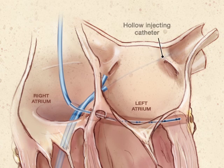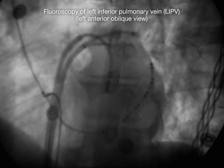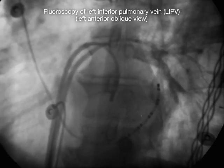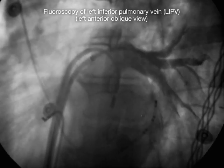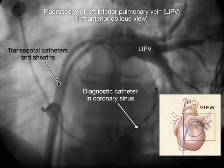A hollow injecting catheter is placed into each of the pulmonary veins and contrast is injected to outline the size and shapes of the veins. Fluoroscopy is used intermittently throughout the procedure to guide catheter placement, access to the left atrium, and manipulation of the mapping and ablation catheters within the heart.